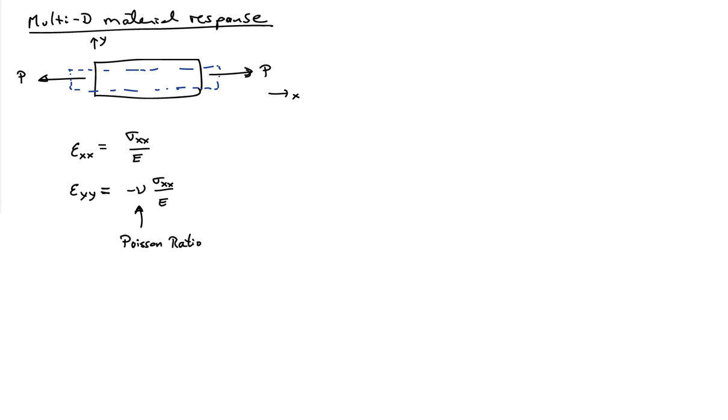So I get a normal strain in the Y direction, which is proportional to the normal strain in the X direction. And that constant of proportionality we write down as nu, and it's called the Poisson ratio. And the Poisson ratio lives between minus 1 and 1 half for real materials.